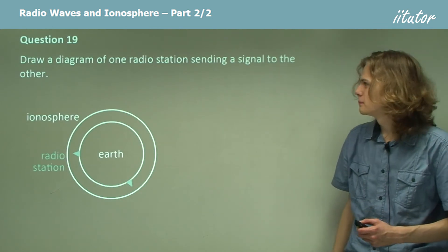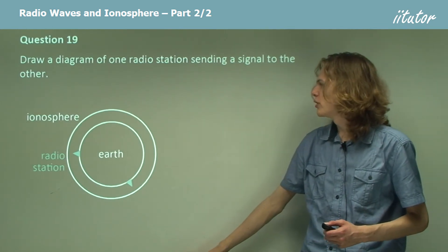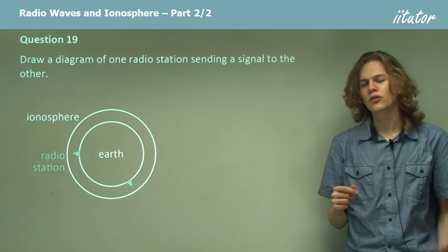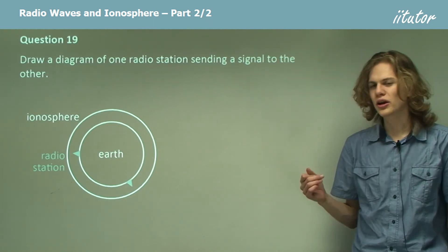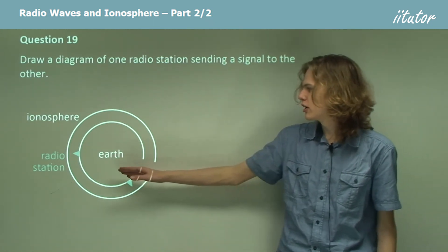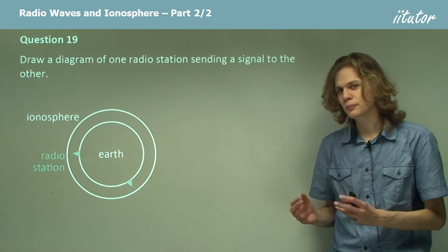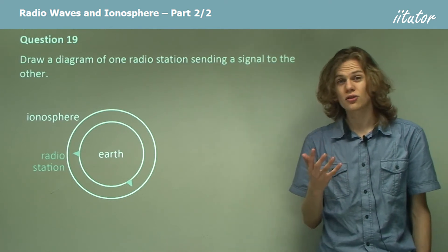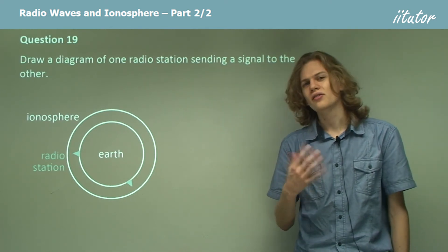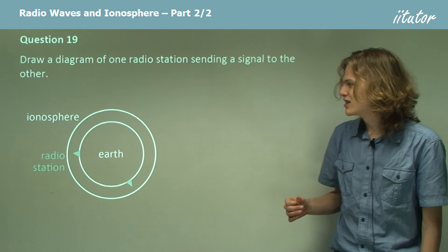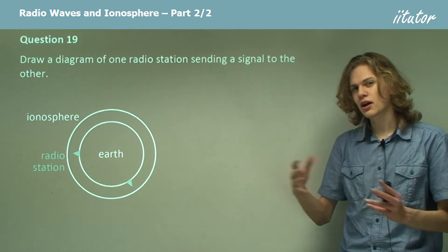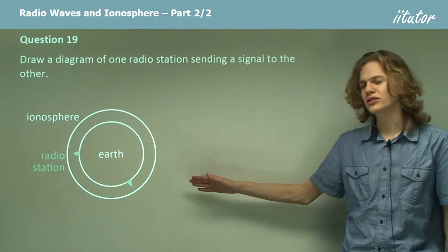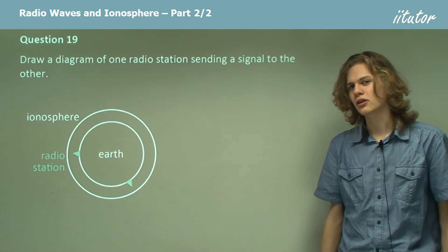Question 19. Draw a diagram of one radio station sending a signal to the other. We have the radio station on the left side of this diagram broadcasting a signal, but it doesn't have line of sight to the second radio station. So how is it going to get the signal there? By using the ionosphere. It can bounce a signal off the ionosphere to the receiving station.